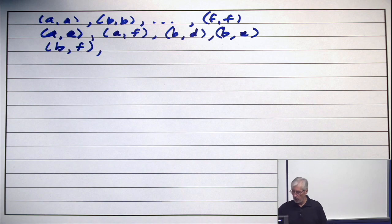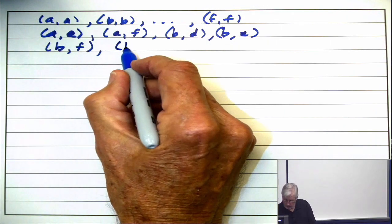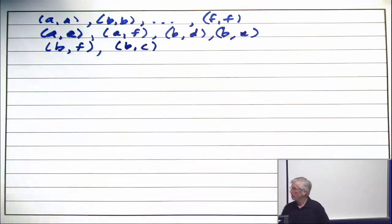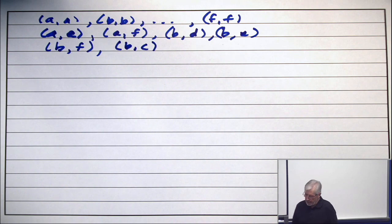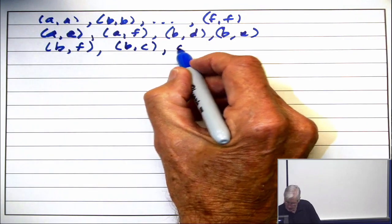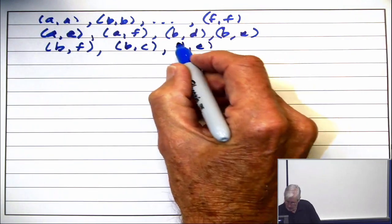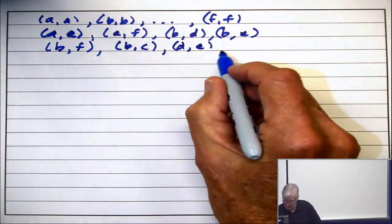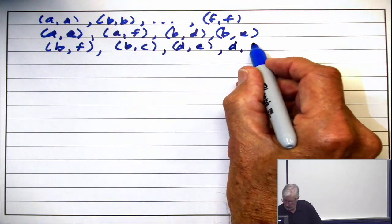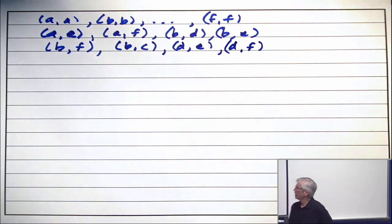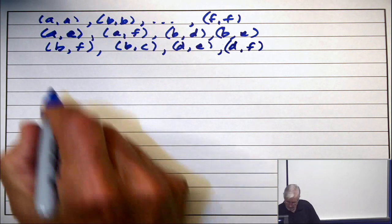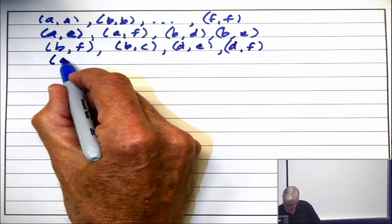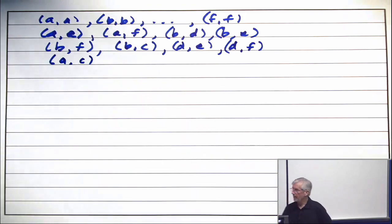What else should I write? B comma C. Good. Anything else? D comma E. Anything else? D comma F. Anything else? A comma C.